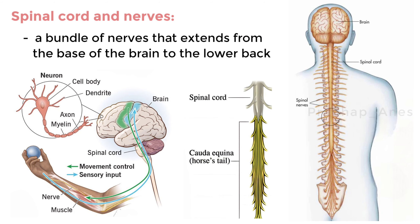At the bottom of the spinal cord is the cauda equina, a collection of nerves that derives its name from the Latin translation of horse's tail. Early anatomists thought the collection of nerves resembled a horse's tail.